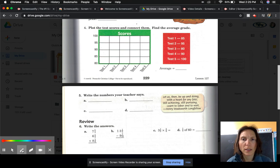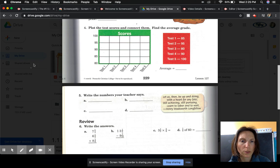We have test one, got an 85. So start with your horizontal axis, your horizontal line here. Test one, and we're going to put a point there on 85. And then let's go along our horizontal line to test two and put a point at 95.